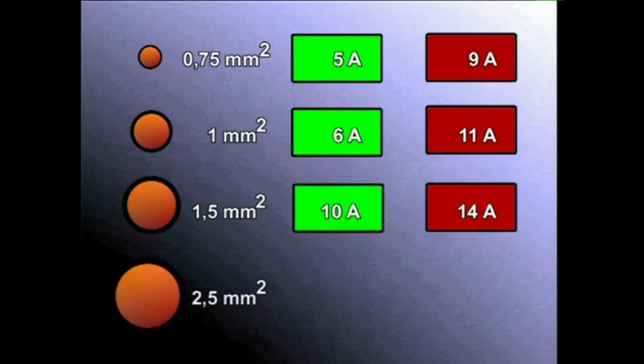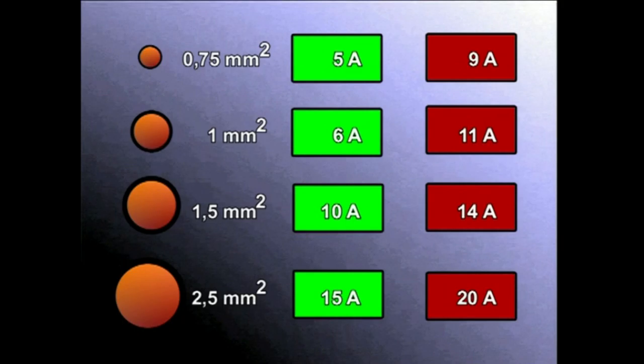Bi komabost milimetro karratuko sekzioa duen kableak hamabost ampereko intentsitatea onartzen du, naiz eta aldi laburrean hogei amperekoa onar dezakeen.